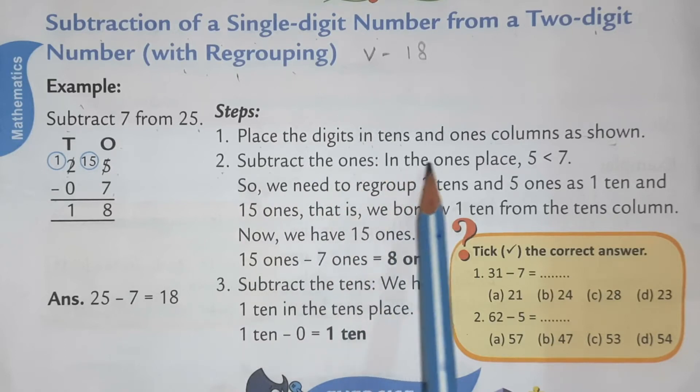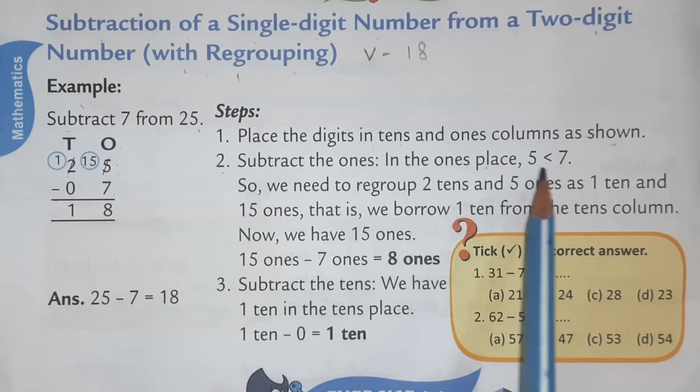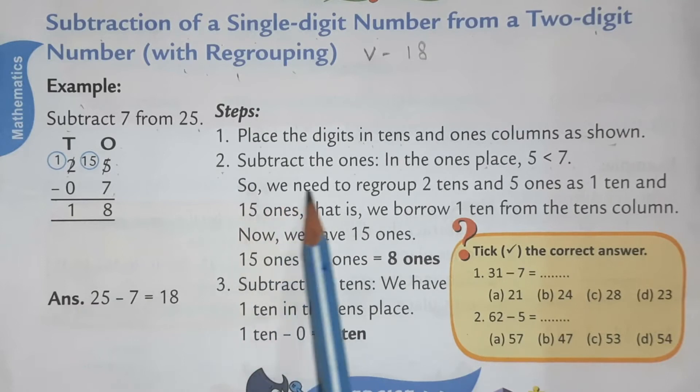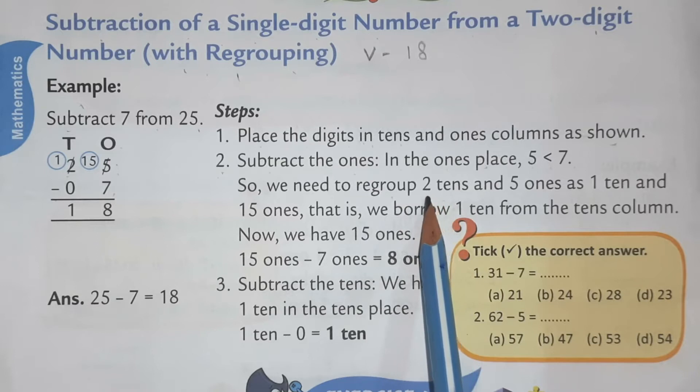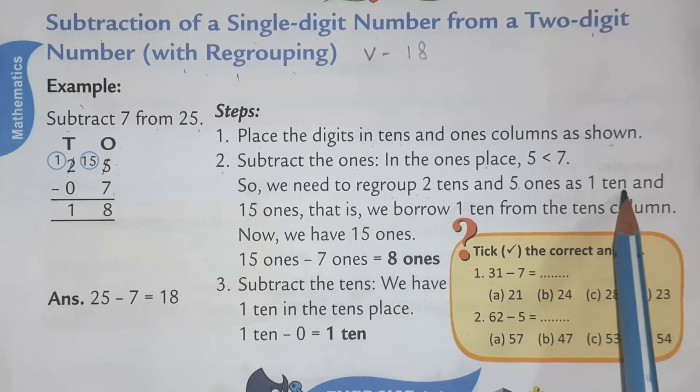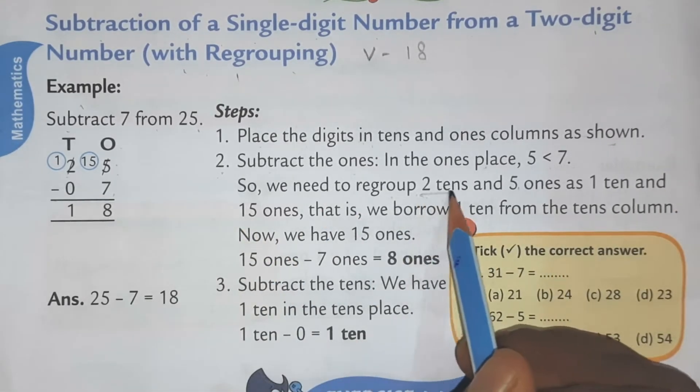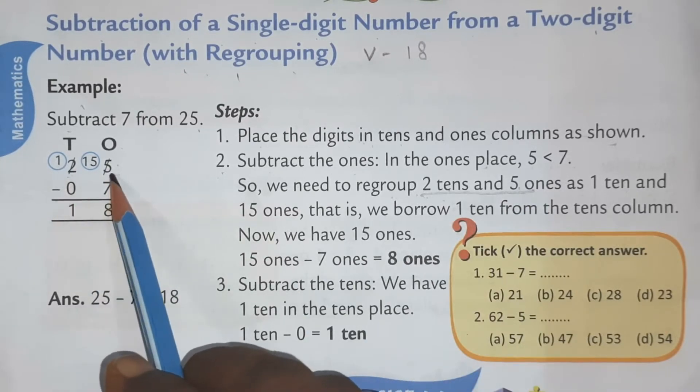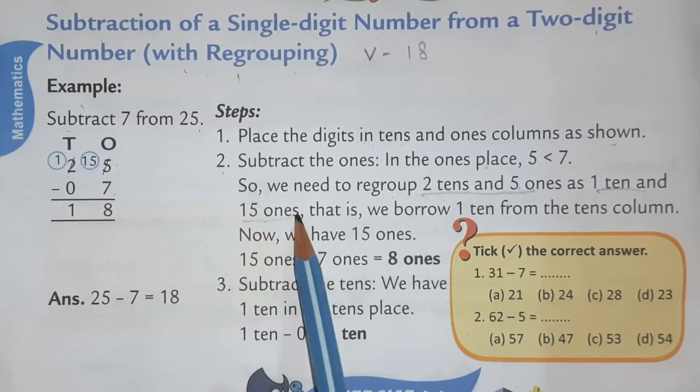subtract the 1s in the 1s place that is 5 minus 7. As you can see 5 is less than 7. So we need to regroup. We had to regroup 2 10s and 5 1s as 1 10 and 15 1s. First we have got the 2 group of 2 10s and 5 1s. Now we will regroup 1 10 and 15 1s.